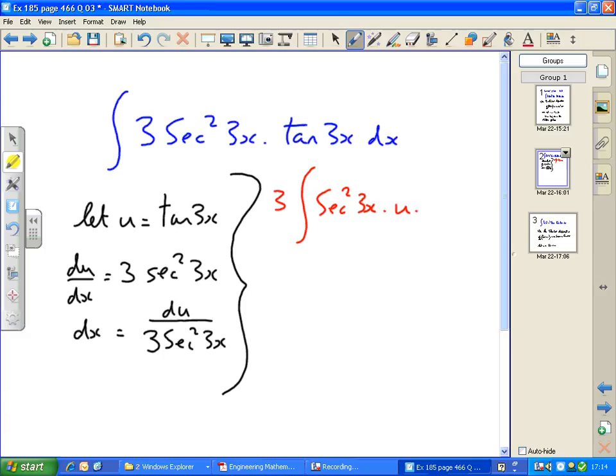And then you see that the sec squared 3x terms cancel, but actually so does the 3.